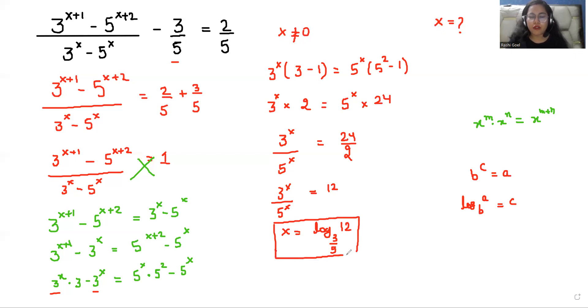And in terms of decimal, you can say that x is equals to similar to minus 4.864. That's how you can solve this rational exponential equation.